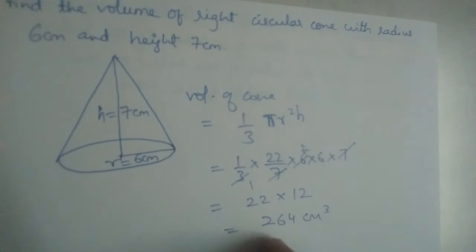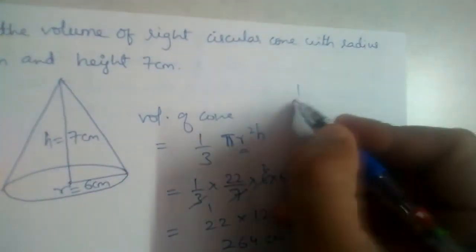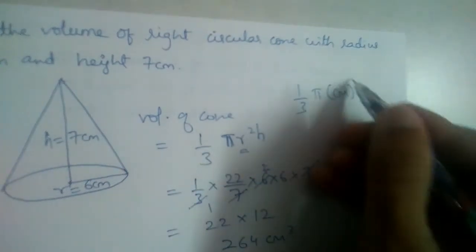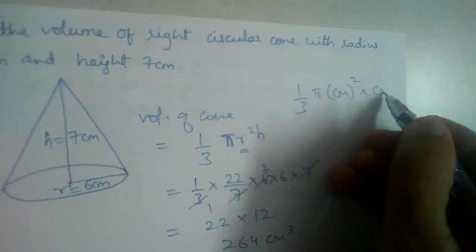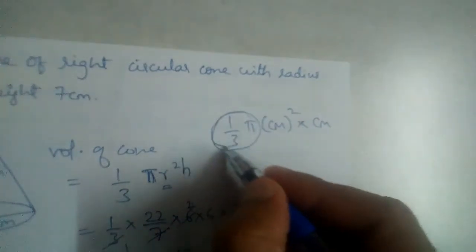The volume of the cone is 264 cubic centimeters. Why are we getting this in cube? The radius is in centimeters, so r squared is centimeters squared. Height is also in centimeters. The constants 1/3 and π don't have units.